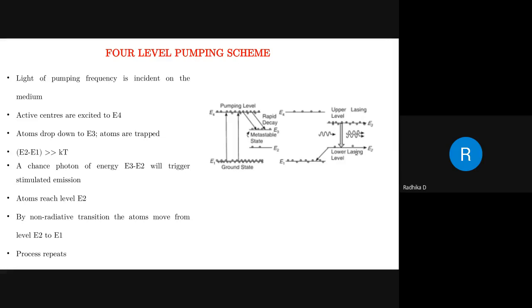Stimulated emission occurs between E3 (upper lasing level) and E2 (lower lasing level). After stimulated emission, the remaining atoms in E2 are still at a relatively high energy level, so they lose energy and come back down to E1 to reach equilibrium. If more atoms accumulate at E1, you apply more energy — optical pumping or electrical discharge — sending them back to E4, then E3, where they accumulate again. A few will accumulate in E2, and stimulated emission between E3 and E2 keeps repeating as long as the energy supply is maintained.